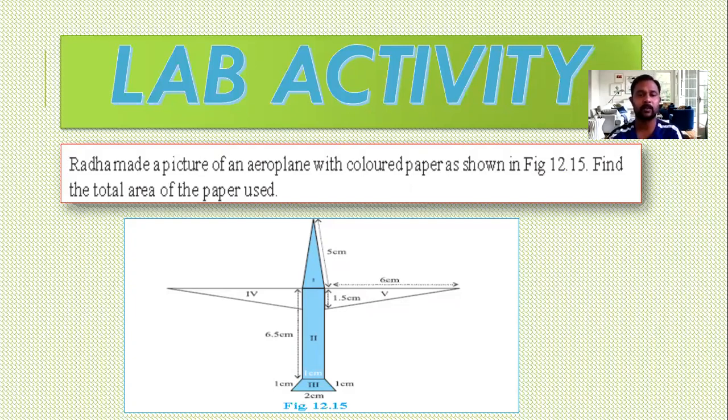It is a trapezium with three sides 1 cm each and another side 2 cm. Fourth and fifth parts are equal. Congruent right triangles with one side 6 cm and base 1.5 cm.